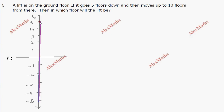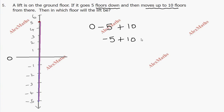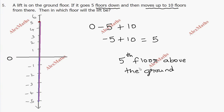So in the diagram along the path, the ground floor is 0. Five floors down is minus 5. Then moves up to 10 floors from there: plus 10. So 0 minus 5 plus 10 equals 10 minus 5 equals 5. So the lift will be on the fifth floor above the ground.